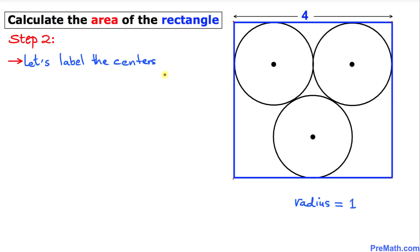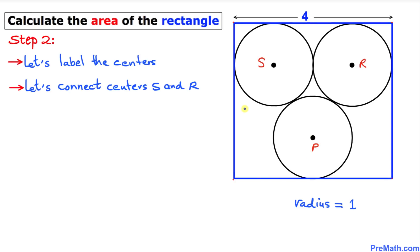The next step is to label the centers. I'm going to label the left center S, the right center R, and the top center P. Now we are going to connect centers S and R.